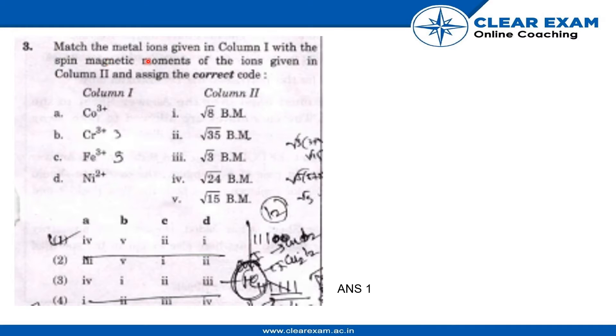The question is: match the metal ions given in column 1 with the spin magnetic moments of the ions given in column 2 and assign the correct code. We have to first calculate the magnetic moments of each of these ions.